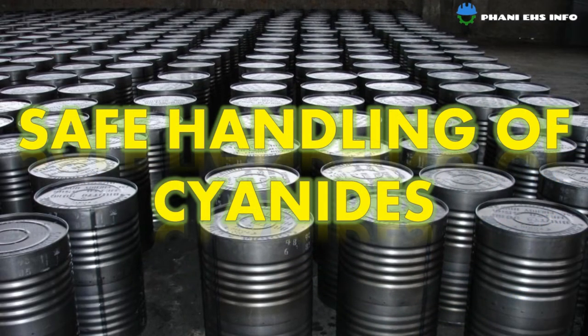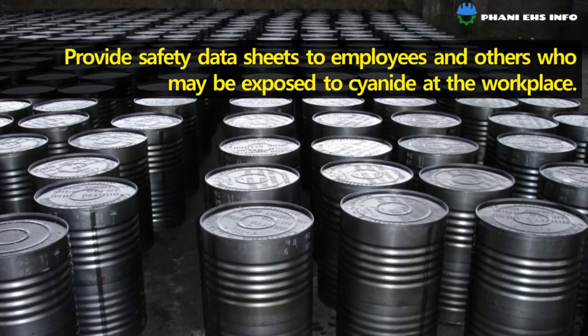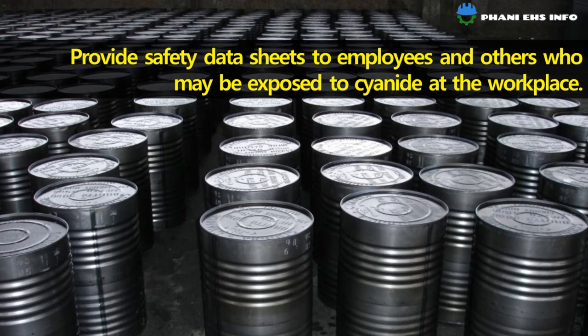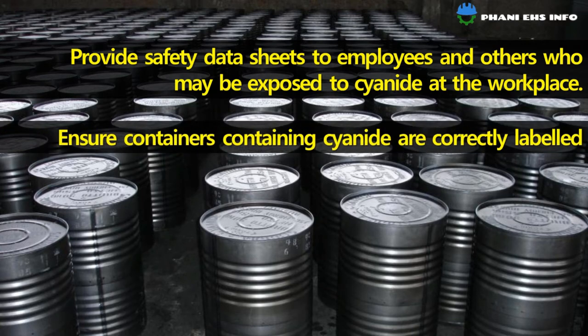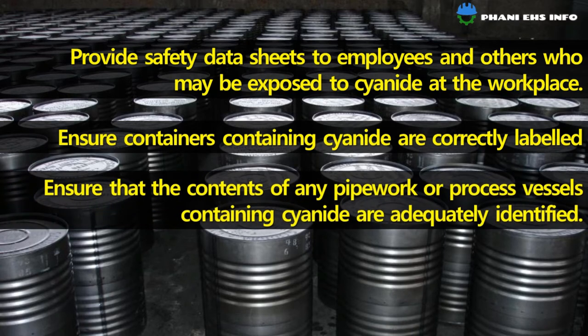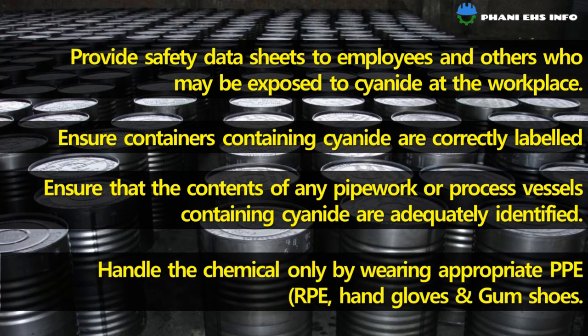Safe handling of cyanides: provide safety data sheets to employees and other workers who may be exposed to cyanide at the workplace. Ensure containers containing cyanide are correctly labeled. Ensure that the contents of any pipework or process vessels containing cyanide are adequately identified. Handle the chemical only by wearing appropriate PPE — respiratory protection, hand gloves, and gum boots.